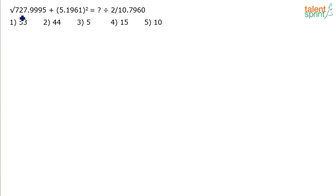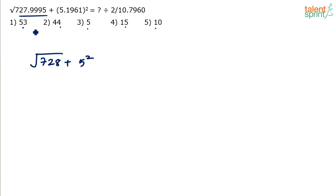It's all about taking the closest values possible. For example, 727.9995 is very close to 728, so we consider square root of 728. For 5.1961 squared, we can take it as 5 squared since options are not close. And 10.7960 can be approximated as 11. So the expression becomes: square root of 728 plus 5 squared, equals question mark divided by 2 by 11.